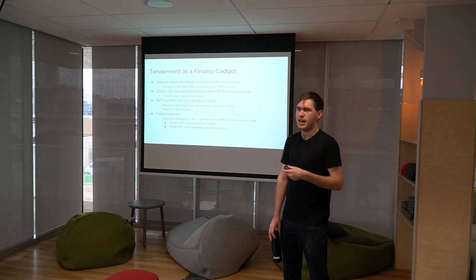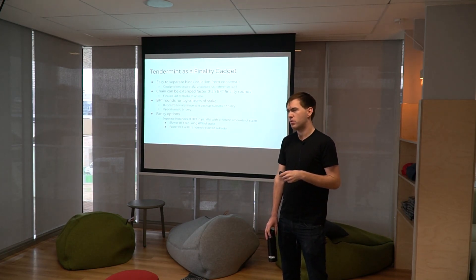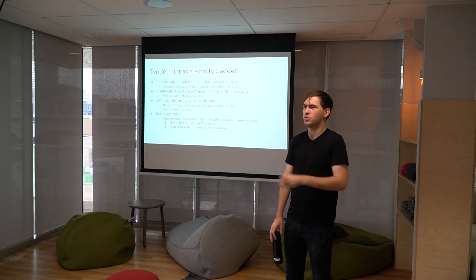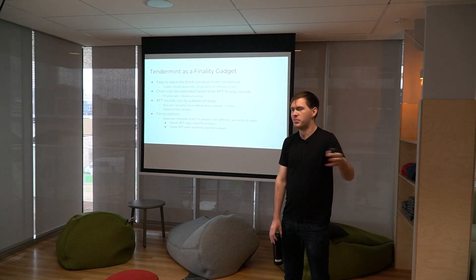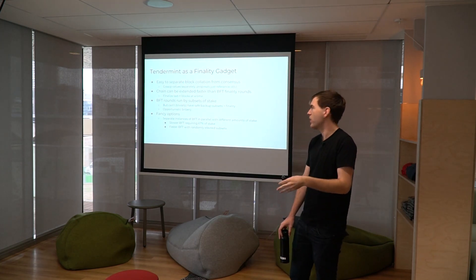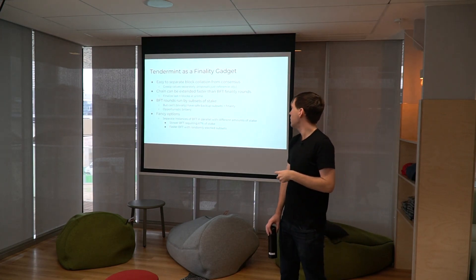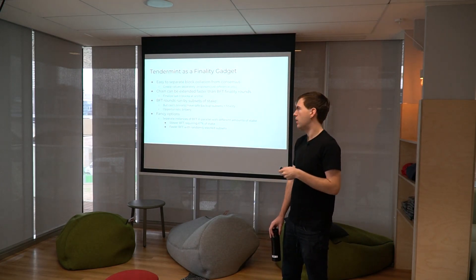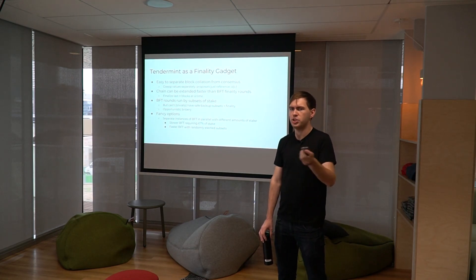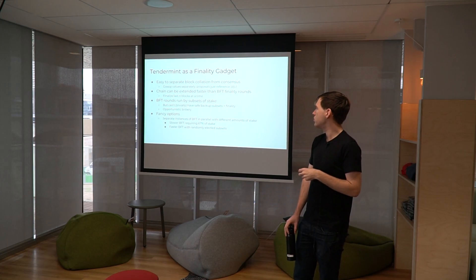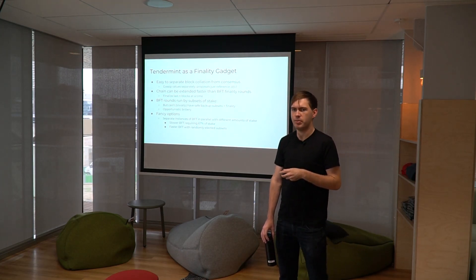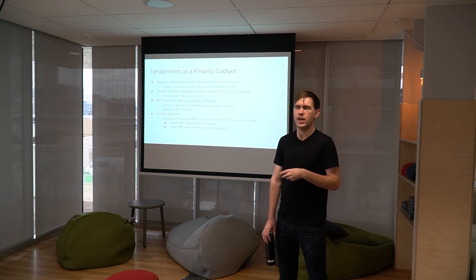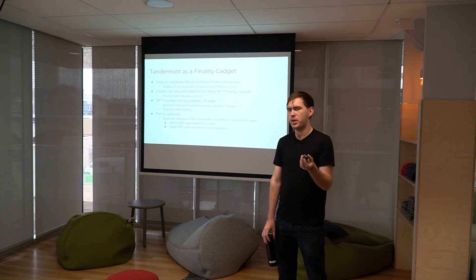But it would also be easy enough to use Tendermint as a finality gadget, where you have a separate block production rule — which can be arbitrary, even a single node producing blocks — and BFT consensus is just used to finalize them. You could run Tendermint as a finality gadget on top of an existing blockchain with something like Tezos's stake-proportional proposer election and existing reward mechanisms. This has the advantage of probably being easier to implement, allowing you to maintain more of the rules in your existing block production algorithm, and not tying the speed of block production to the speed of BFT finality.